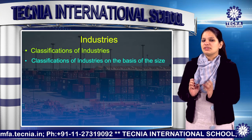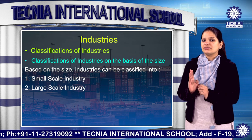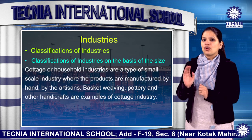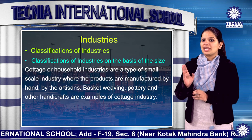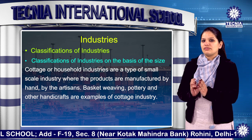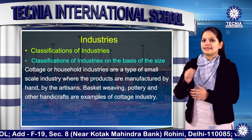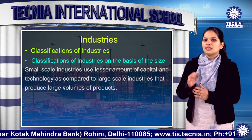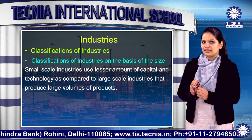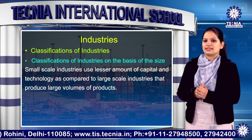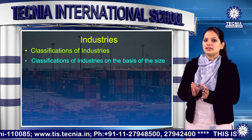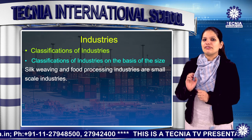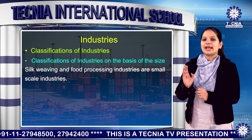Now, classification of industries on the basis of size. Based on size, industries can be classified into two categories: small scale and large scale. Cottage or household industries are a type of small scale industry where the products are manufactured by hand by the artisans. Basket weaving, pottery and other handicrafts are examples of cottage industry. Small scale industries use lesser amount of capital and technology compared to large scale industries, where investment of capital is higher and the technology used is superior.